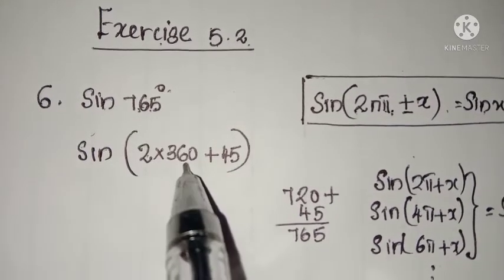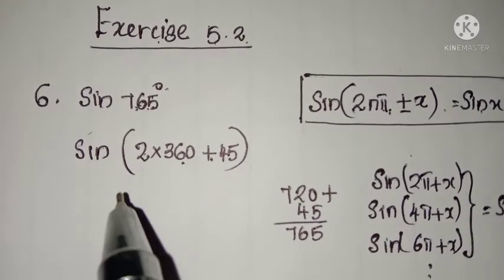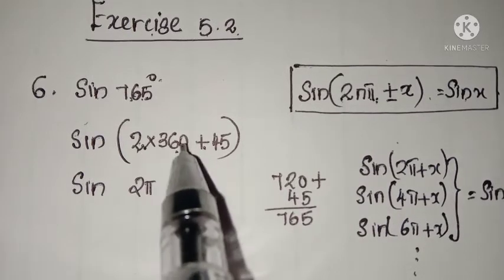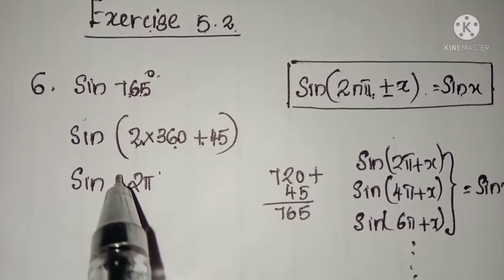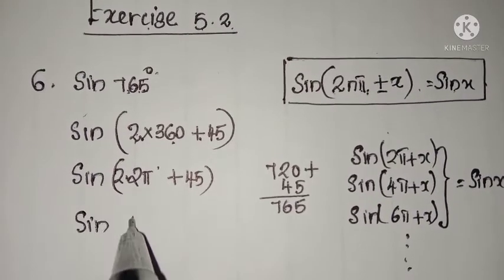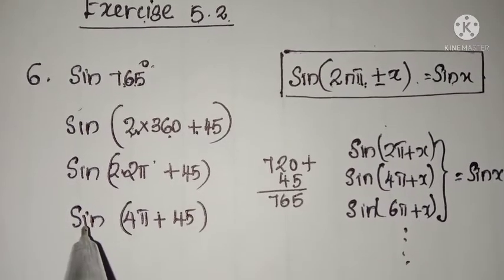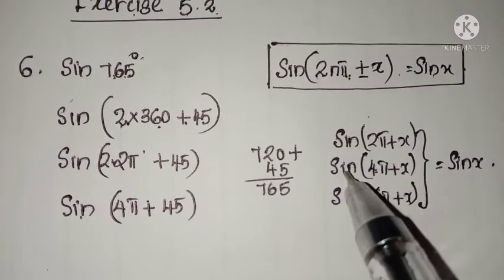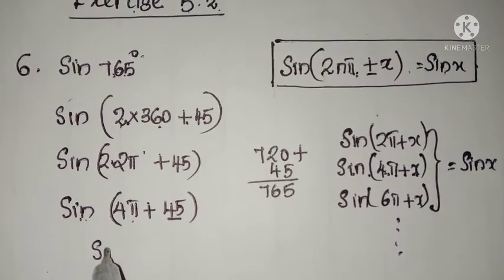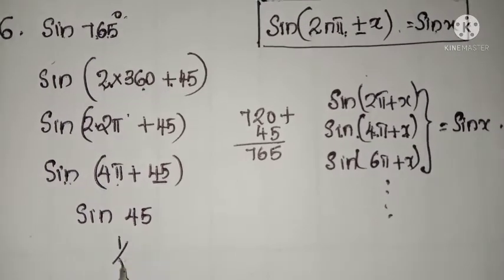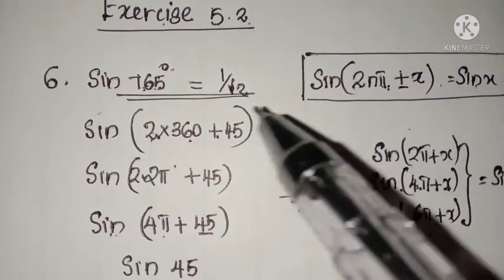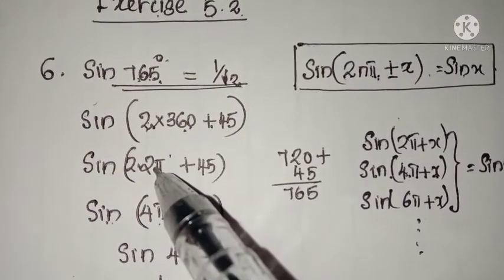We split the angle 765° into multiples of 360° and add the remaining angle. Since 360° is 2π, we have 2×360° = 4π, so sin(765°) = sin(4π + 45°). This is of the form sin(4π + x), which equals sin(x). So sin(4π + 45°) = sin(45°) = 1/√2. The value of sin(765°) is 1/√2. The method is to convert the given angle in terms of 360° or 2π.